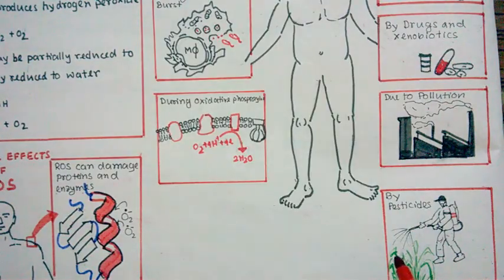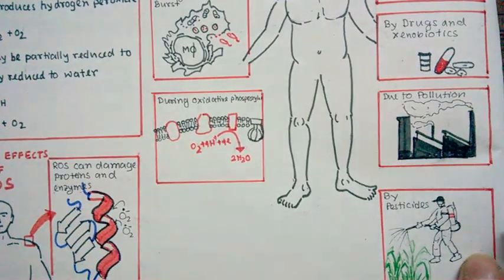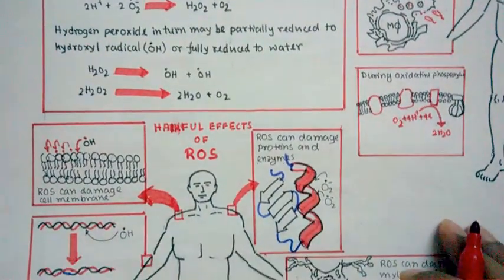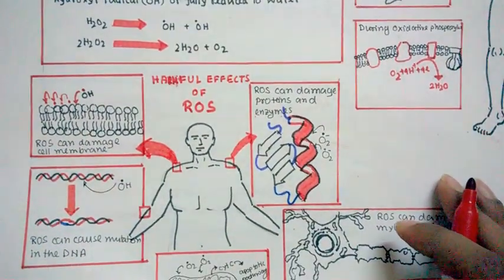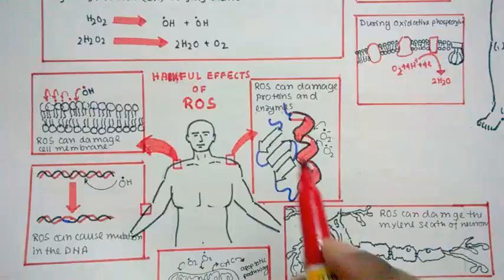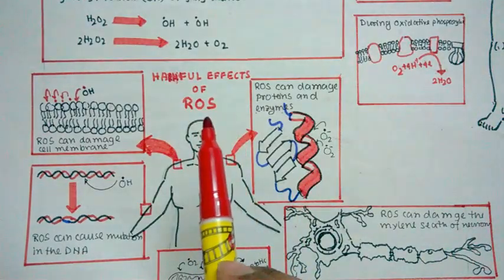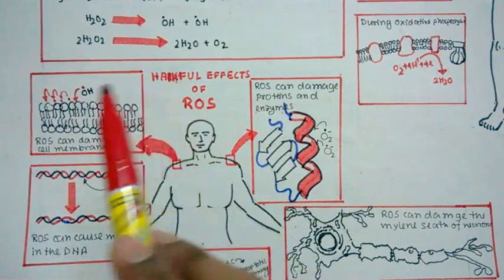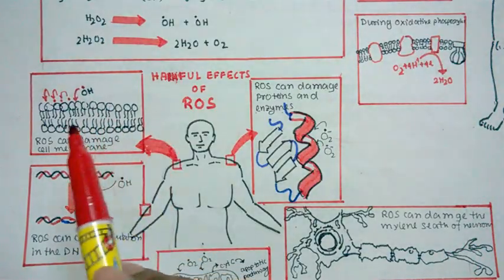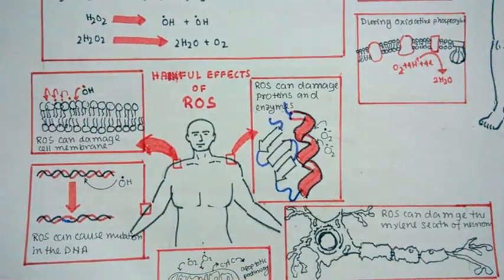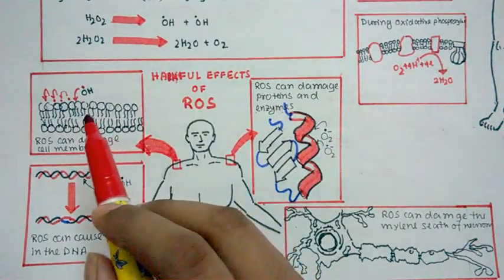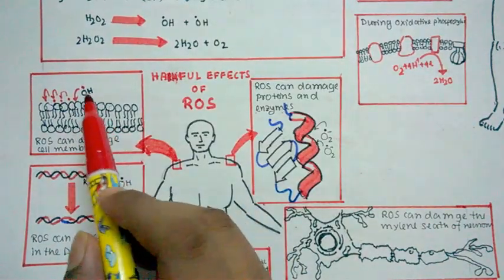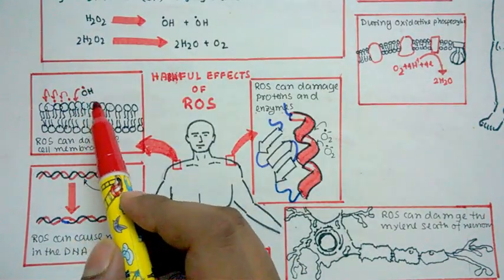So let's see what are the harmful effects of ROS in our body. ROS is very harmful, and the first most harmful effect of ROS is lipid peroxidation. So here you can see a plasma membrane, a plasma membrane bilayer, a lipid bilayer.